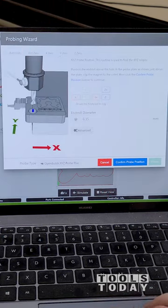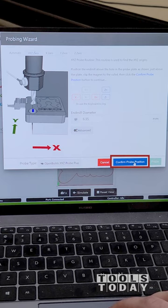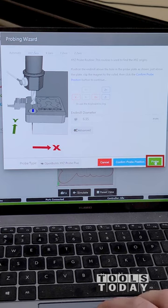In the software I click Probe. There are a few probing options, but for this we're going to set our X, Y, and Z0. We'll confirm the probe position and it will get started.